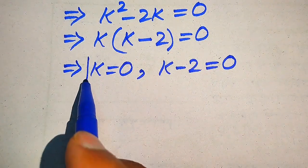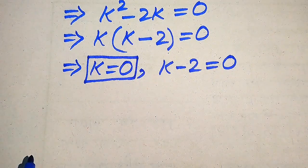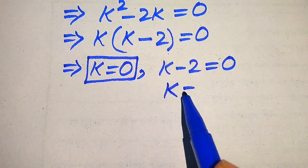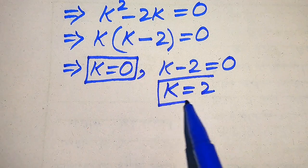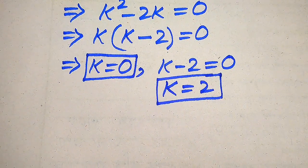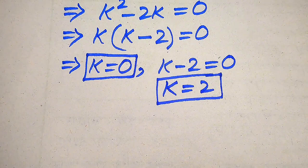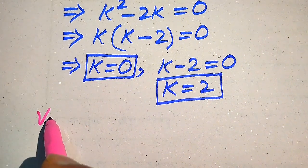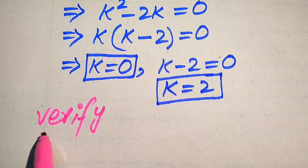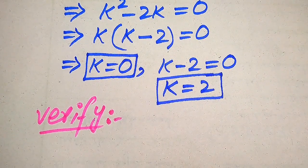We split this into two cases. The first case gives k equals 0, which is our first root of the given equation. The second case, k minus 2 equals 0, gives k equals 2, which is our second root. Now we verify which roots are solutions and which are extraneous roots.